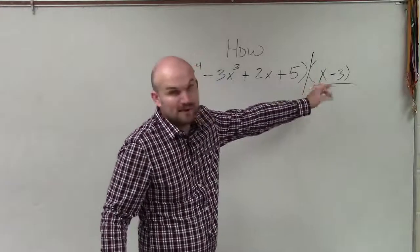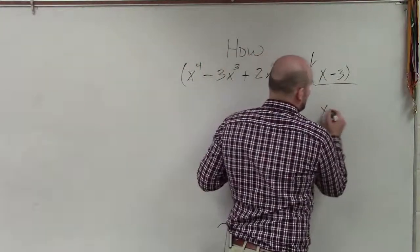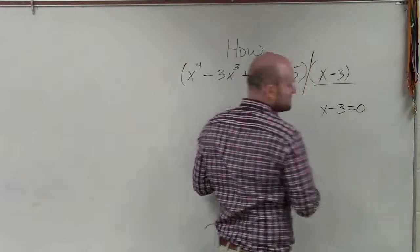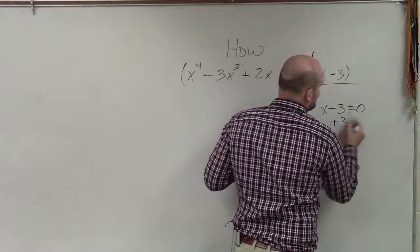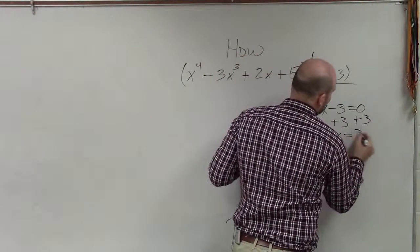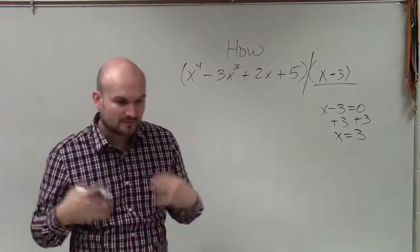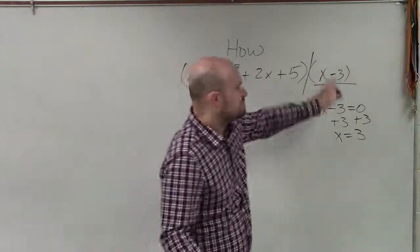I'm representing this as a factor. That means all my factors I can set equal to 0 to identify the actual 0. So therefore, I have x equals 3 would be my 0, if this represents a factor.